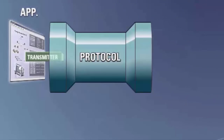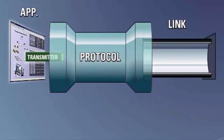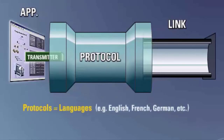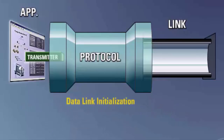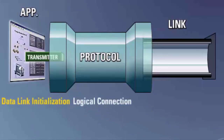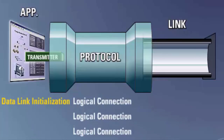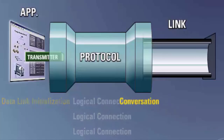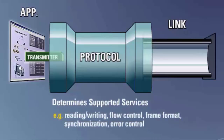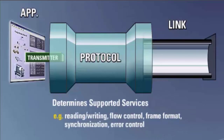A protocol is the link between the user's application and the communications link — a common set of rules governing the exchange of data between devices on a network. We can equate the protocol to a language such as English, French, or German used to exchange thoughts and ideas. The protocol determines things such as the initialization of the data link, logical connections, communication sessions, supported services including reading from or writing to a device, flow control, frame format, synchronization, and error control.